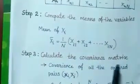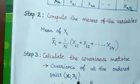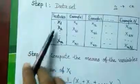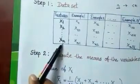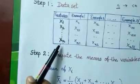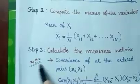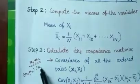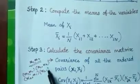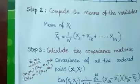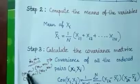In the third step we have to find the covariance matrix. To find the covariance matrix, first we write all the ordered pairs of features. If we have small n features we can write n-squared ordered pairs. For example, if we have two features x1 and x2, the ordered pairs are (x1,x1), (x1,x2), (x2,x1), and (x2,x2) — that is, four ordered pairs for n=2.